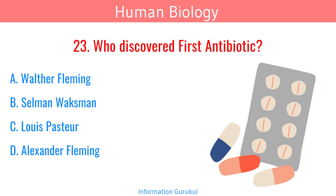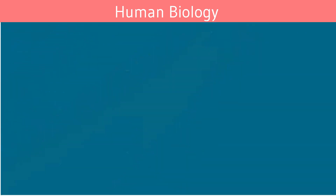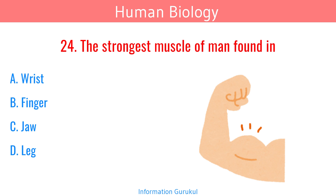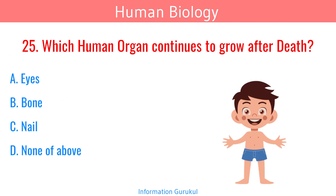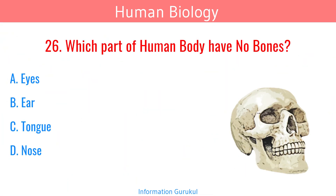Who discovered the first antibiotic? Alexander Fleming. The strongest muscle of man is found in the jaw muscle. Which human organ continues to grow after death? Nail. Which part of the human body has no bones? Tongue.